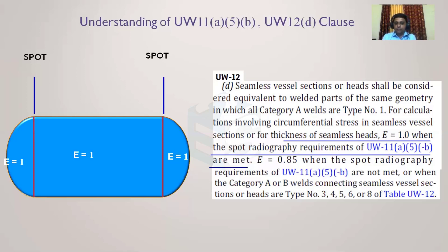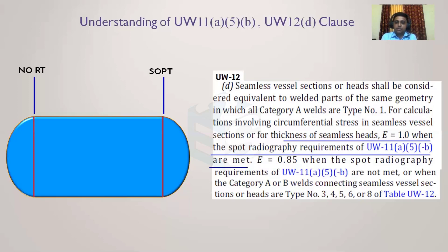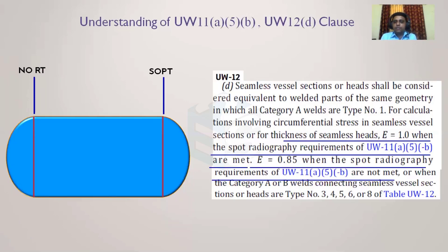If spot radiography is not done for the head-to-shell junction on both sides, consider: seamless pipe on left, seamless head on right, but no radiography on the left shell-to-head junction and spot radiography on the right shell-to-head junction — then UW-11a5b is satisfied on the right side only. For the right-hand head we can consider joint efficiency as 1, but for the shell, spot radiography is required on both sides, so shell joint efficiency will be 0.85.